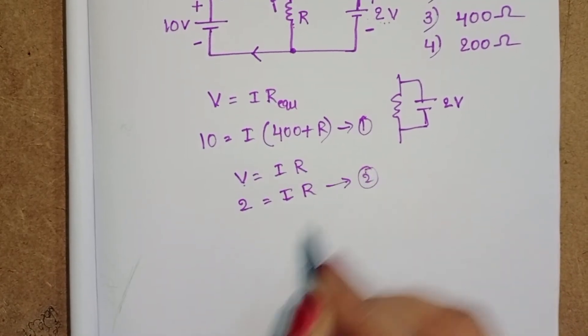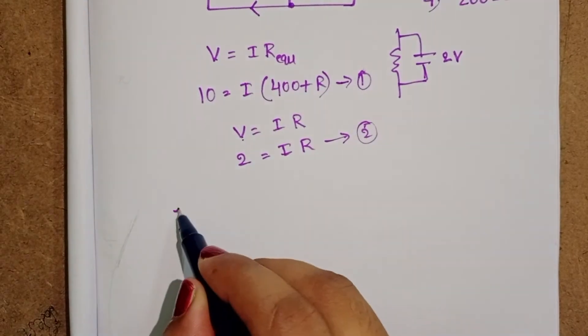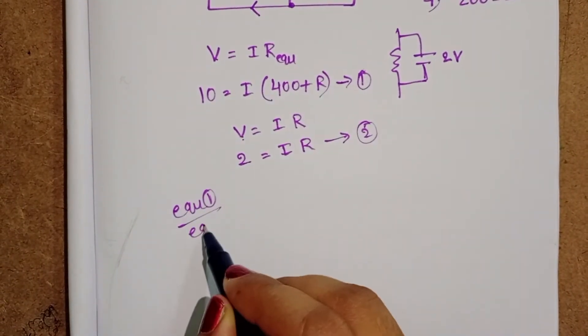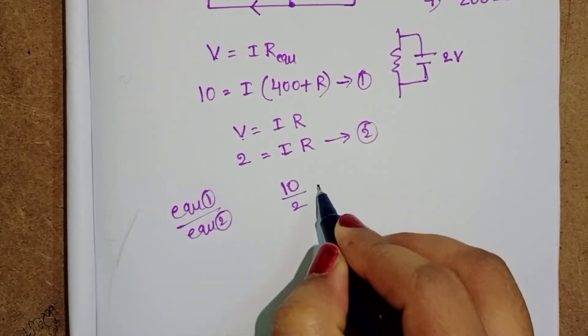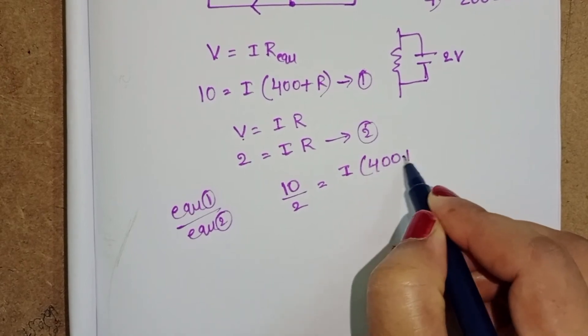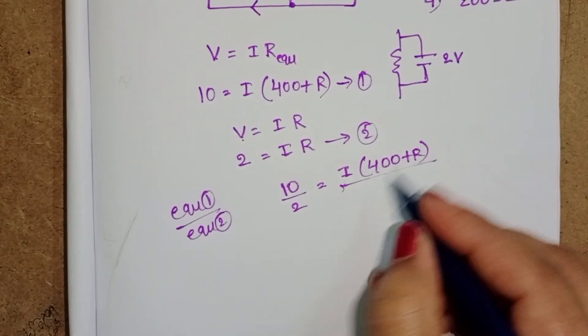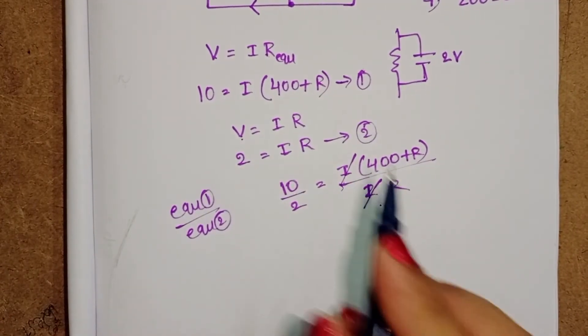Take this is equation 2. Now simplify equation 1 and 2. Take equation 1 by equation 2. 10 by 2 is equals to I into 400 plus R by IR. I get cancelled because current is same.